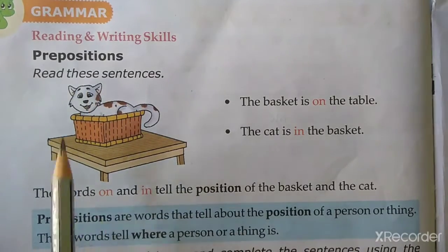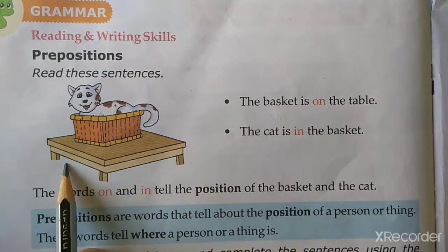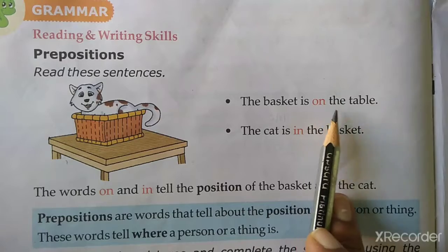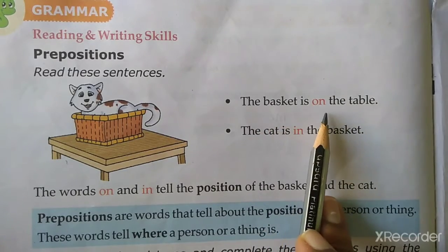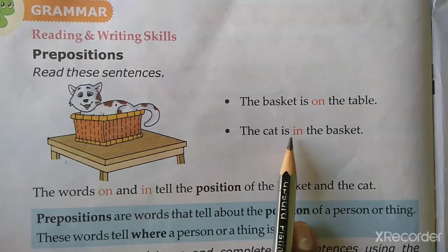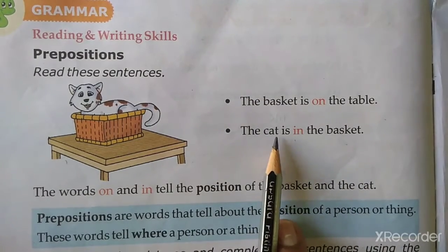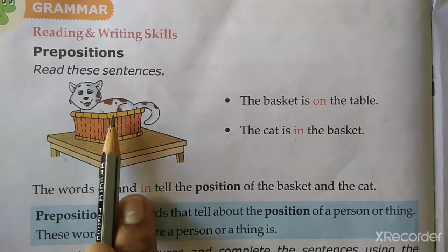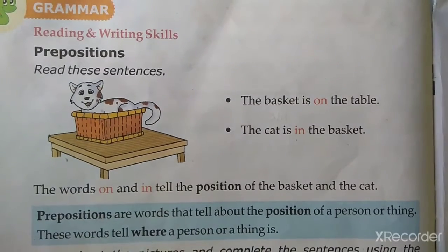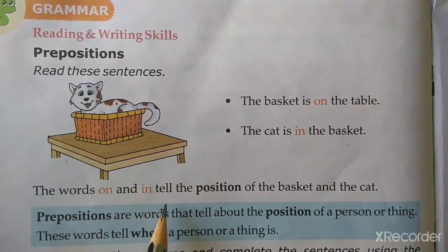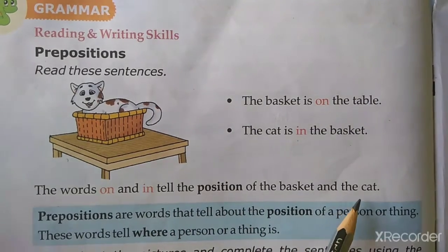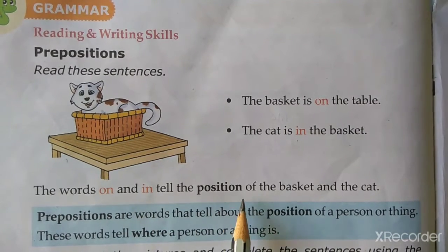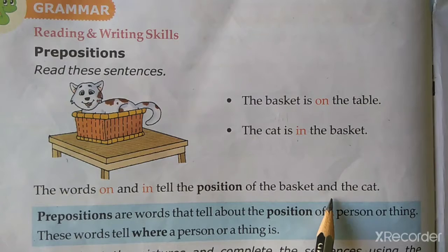Read these sentences. Can you see a cat? We will read the sentences now. The basket is on the table. The cat is in the basket. The basket is on the table and the cat is in the basket. The words 'on' and 'in' tell the position of the basket and the cat.